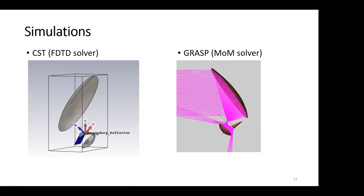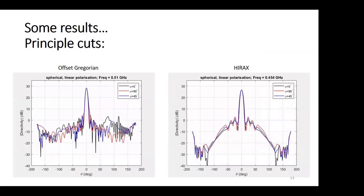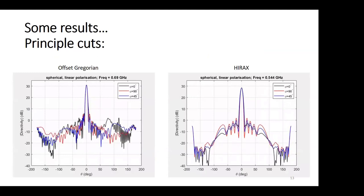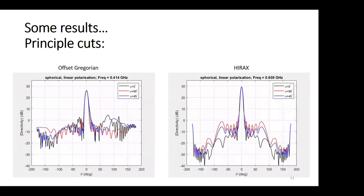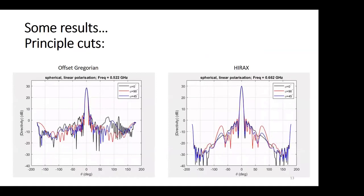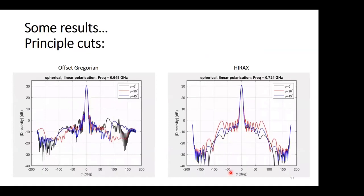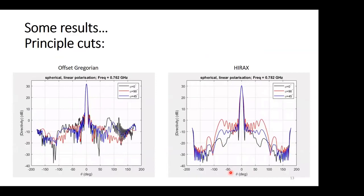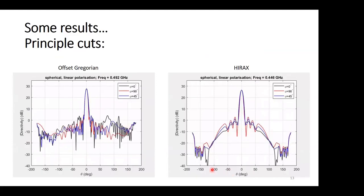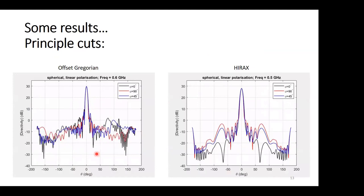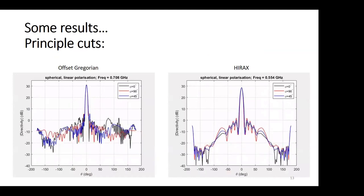This offset Gregorian still needs to be optimized, but just to visualize some results. Here you can see the principal cuts as they change over frequency. You can see the side lobes varying quite a lot over frequency range, also getting a bit bigger, but there's still some asymmetry in the offset Gregorian.